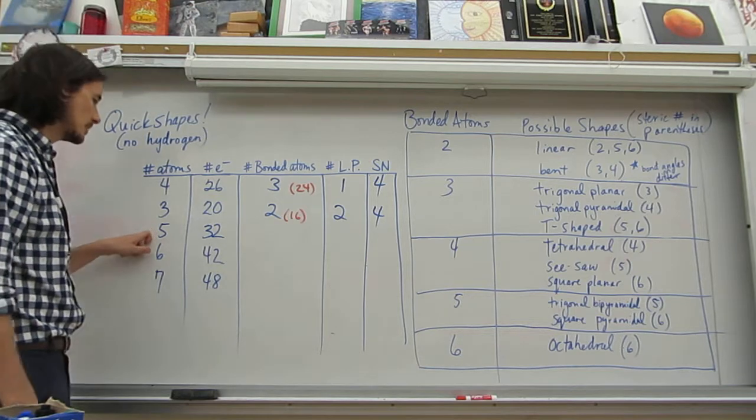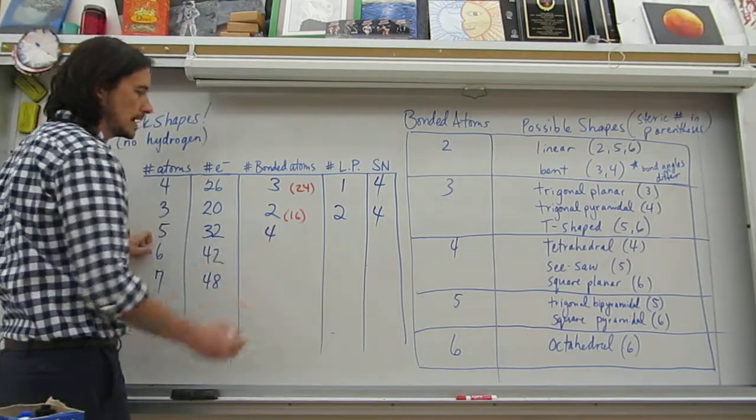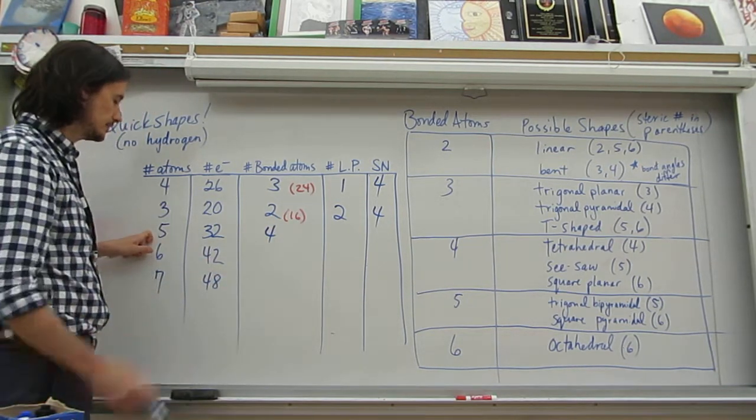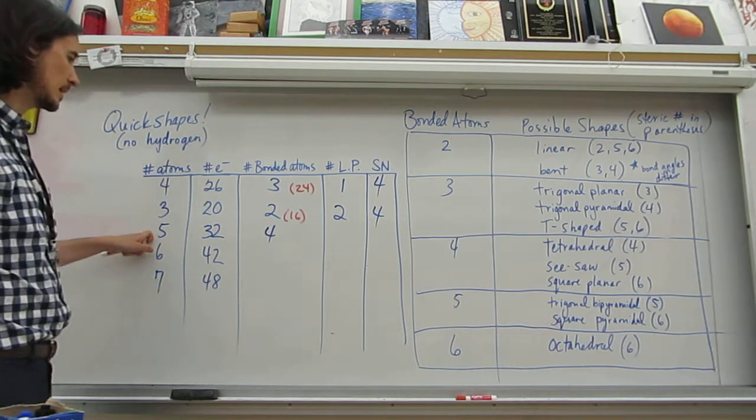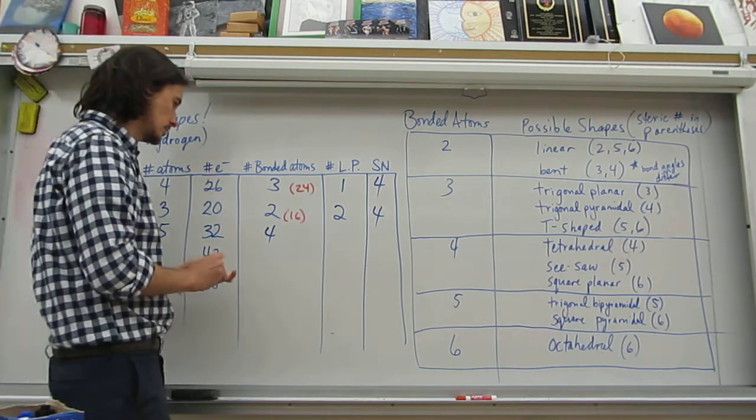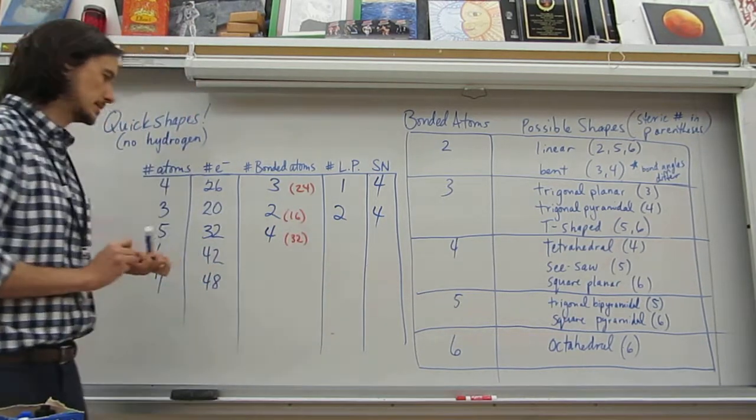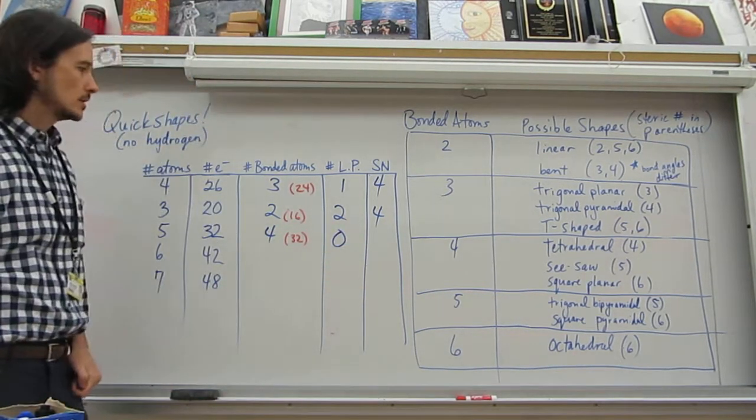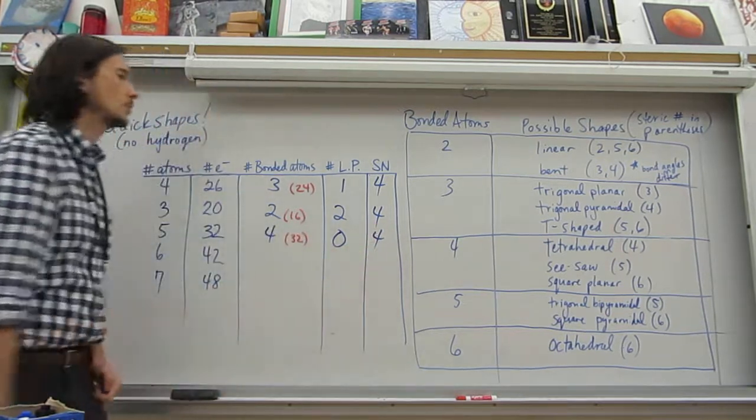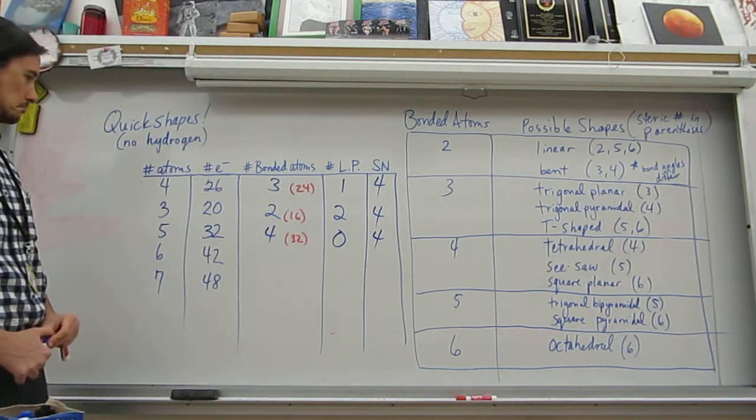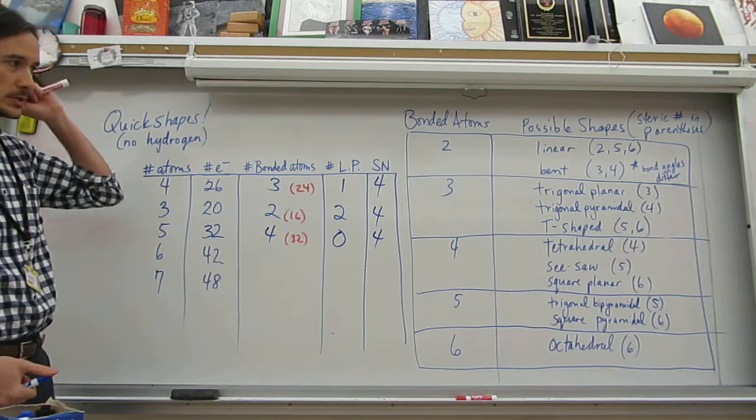All right, number of atoms, five. So there's going to be four atoms bonded to a central atom. And 4 times 8 is 32. So that takes up all of them. We don't have any lone pairs, so we have a steric number of 4. So steric number 4 is going to be tetrahedral.